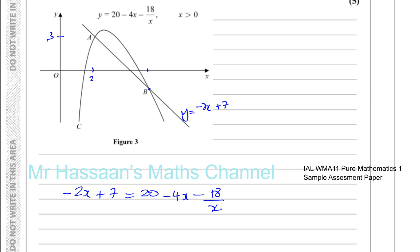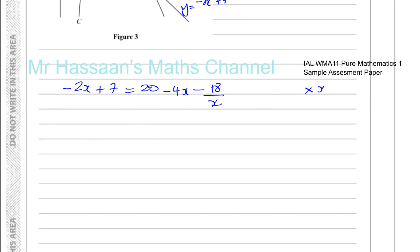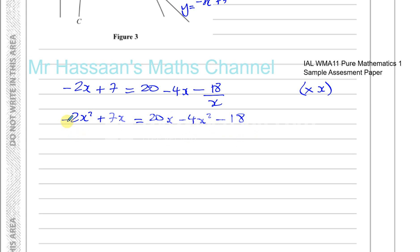Setting the equations equal: minus 2x plus 7 equals 20 minus 4x minus 18 over x. To get rid of the fraction, we multiply everything by x, giving minus 2x squared plus 7x equals 20x minus 4x squared minus 18. Collecting terms: minus 2x squared plus 4x squared gives 2x squared; 7x minus 20x gives minus 13x; and plus 18 equals 0. So we have 2x squared minus 13x plus 18 equals 0.